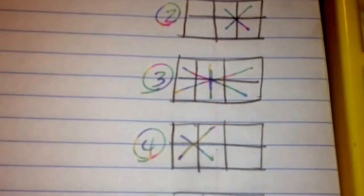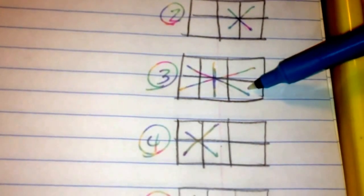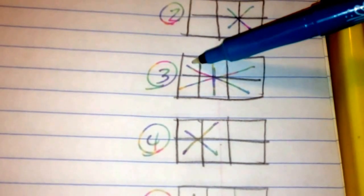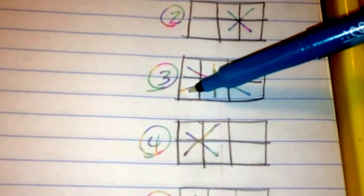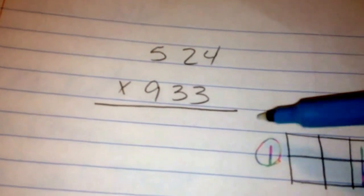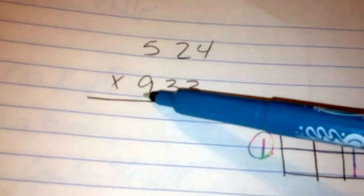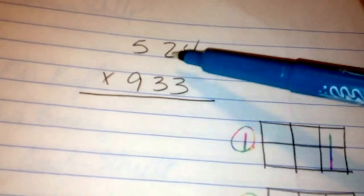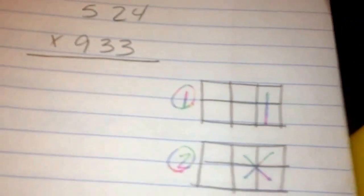Our third digit is done by multiplying your bottom right by your top left, your top right by your bottom left, and your two middle ones. So that gives us 3 times 5, 9 times 4, and 3 times 2.